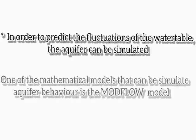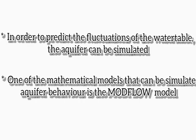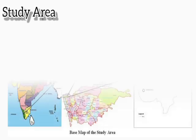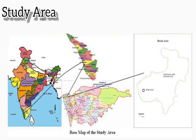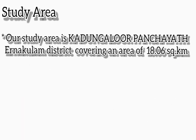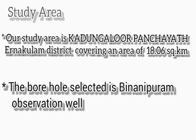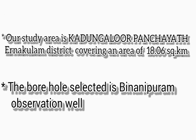In order to predict the fluctuations of the water table, the aquifers can be simulated. One of the mathematical models that simulate aquifer behavior is a MODFLOW model. Our study area is Kadangalur Panjait in Anakalam district, covering an area of 80.06 square kilometers. The borehole selected is the Bhinanipuram observation well.